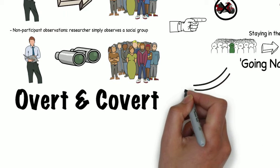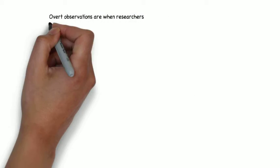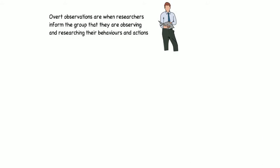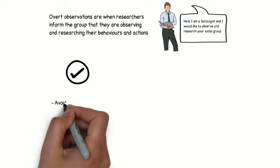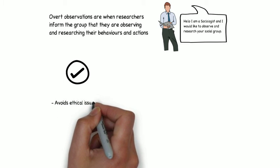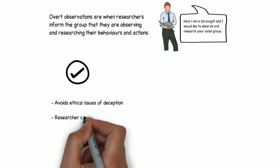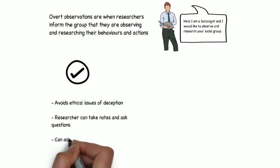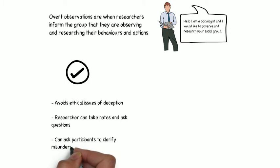Now let's return to overt and covert observations, as a researcher must decide which one they want to use. Overt observations are when a researcher does not lie to a group and informs them that they are being observed and that their behaviours and actions are being researched. Some sociologists favour this method because it avoids ethical issues by gaining fully informed consent. It also allows the researcher to openly take notes and ask questions without fear of being found out, and they can check with group members that they have understood something properly.